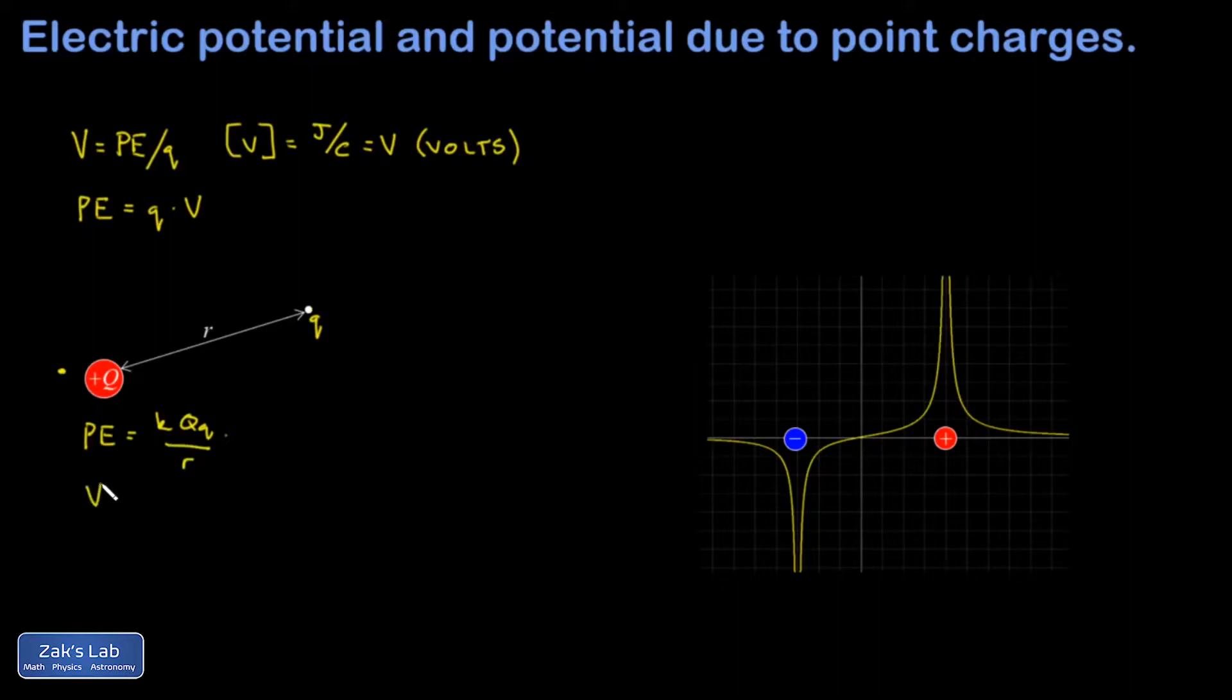So if I follow the definition of potential as potential energy per unit charge, I divide a little Q out of this thing, and I get an expression for the electric potential as a function of R generated by this source charge Q.